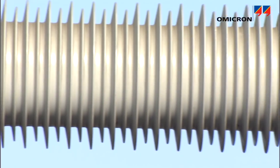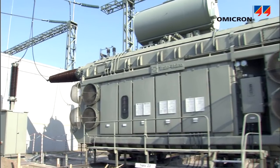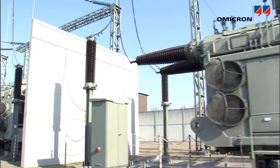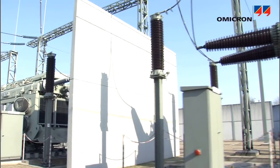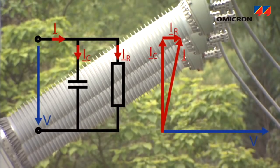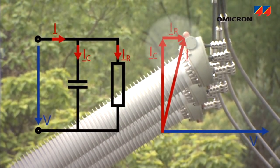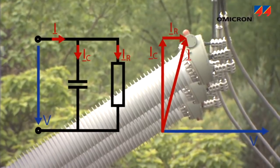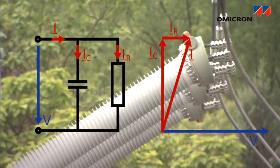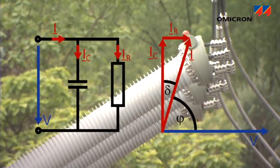The condition of the bushings and the overall insulation of power transformers can be investigated by measuring the capacitance and dissipation factor, also known as the tangent delta or power factor. Aging and decomposition of the insulation, or the ingress of water, increases the losses and thus more energy is turned into heat in the insulation. The level of this dissipation is expressed by the dissipation factor or power factor.